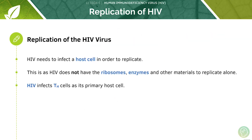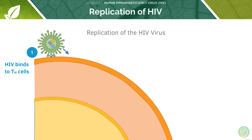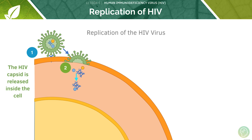HIV replicates like other viruses — it needs to infect a host cell first in order to replicate, since it doesn't have the ribosomes, enzymes and other materials to replicate alone. HIV infects T helper cells as its primary host cell. The HIV attachment proteins bind to the CD4 receptor on the cell surface membrane of T helper cells. Upon entry, the HIV capsid uncoats and releases its contents, such as RNA and enzymes. The RNA genome of HIV contains two RNA copies alongside the protective nucleocapsid.